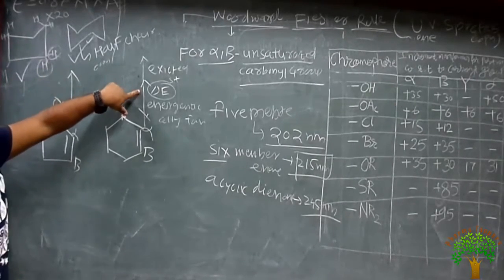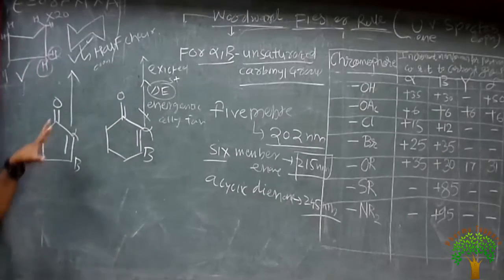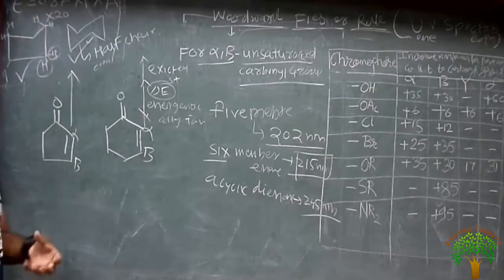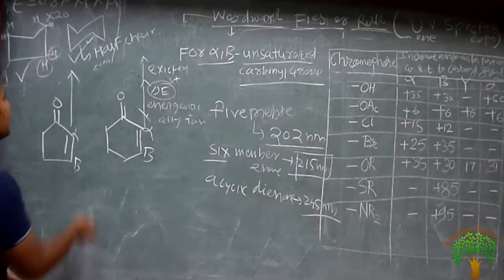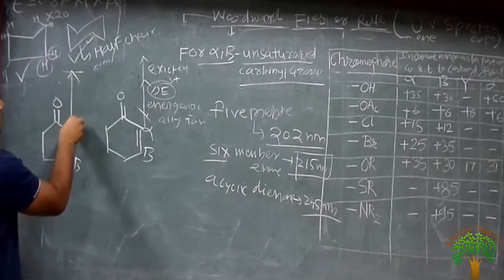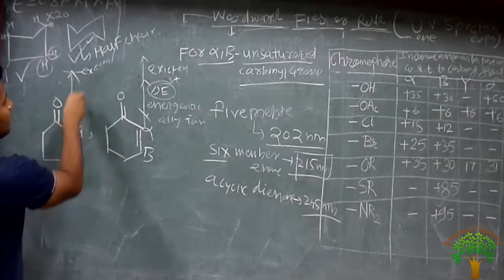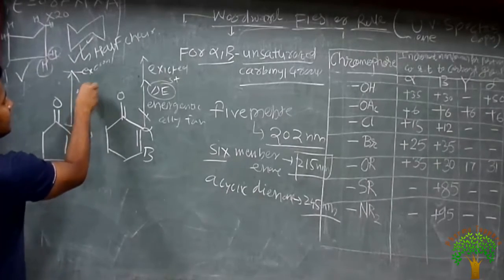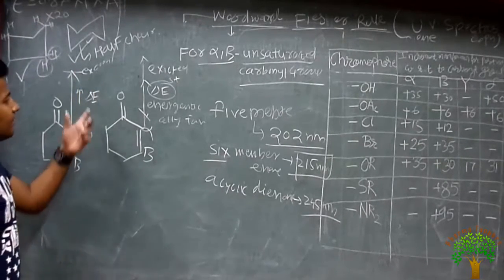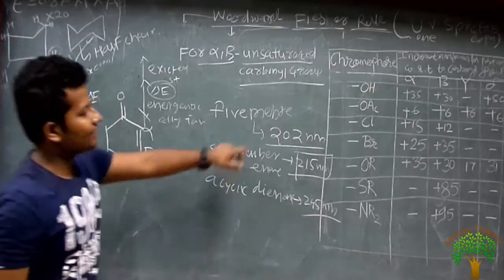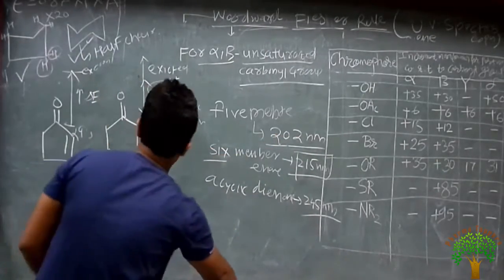The six-membered ring is energetically favorable; the five-membered ring is unfavorable. It takes too much energy to go into the excited state. That's why the gap between the excited state and the ground state increases — delta increases and lambda max decreases. That's why it is about 202 nanometers.